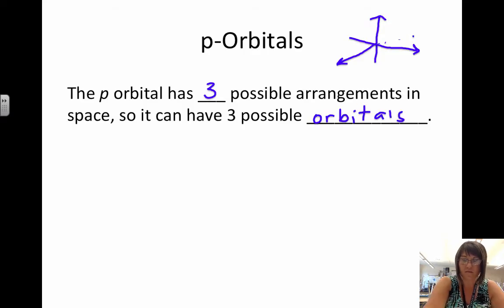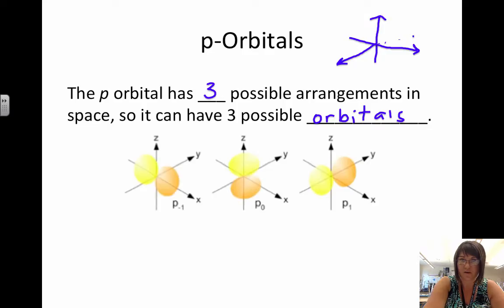Distinctly unique spaces around the nucleus where an electron can be found. So we have one that's oriented along the x-axis, we could call this px. The one along the z-axis, we could call that pz. And the one along the y-axis, which we can refer to as py.